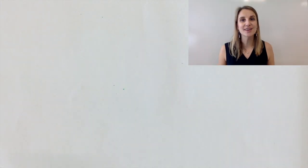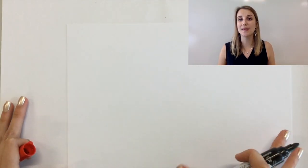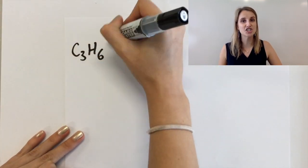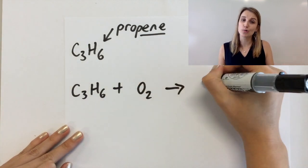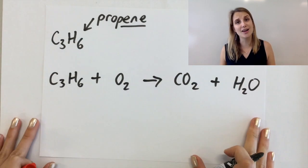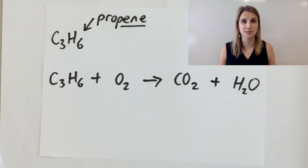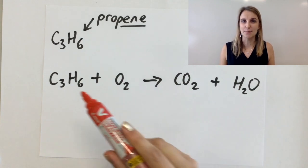Let's check out the complete combustion of propene. So this is C3H6 it's an alkene, can still be combusted and it reacts with O2 and makes CO2 and water just like the last one. Let's go through the steps.